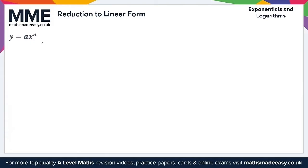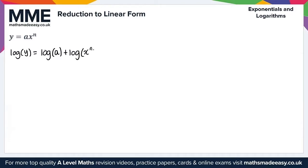To start, let's take the logarithms of both sides of this equation. On the left hand side we get log y. On the right hand side, using the properties of logarithms, since this is a product we can split it up as a sum: the logarithm of a plus the logarithm of x to the n. Using the power rule for logarithms, we can bring that n to the front, giving us log a plus n log x.